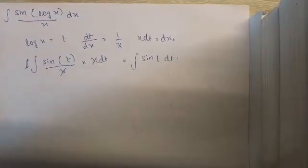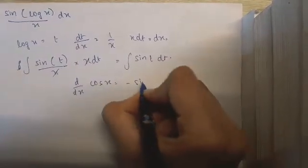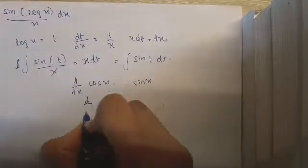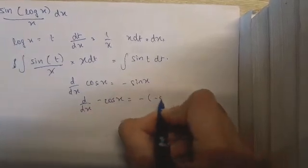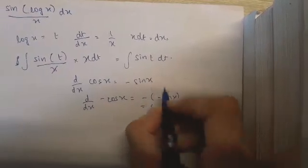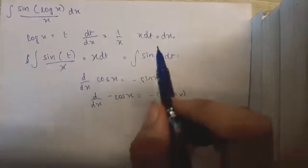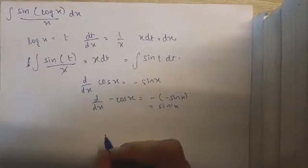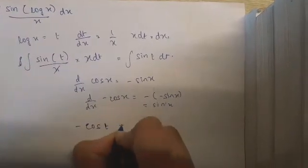We know that the differentiation of cos x is equal to minus sin x. So the differentiation of minus cos x would be minus of minus sin x, which is sin x. And since we have a positive sign here in the integral, which means that the final answer has a negative sign of cos.